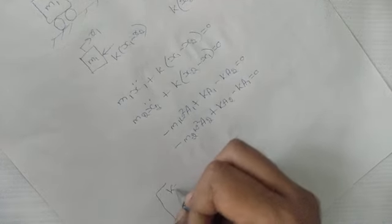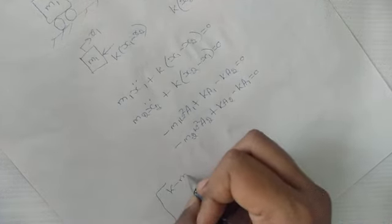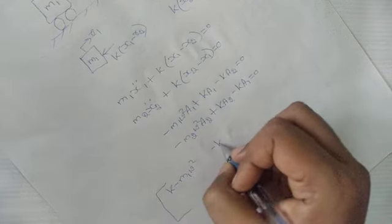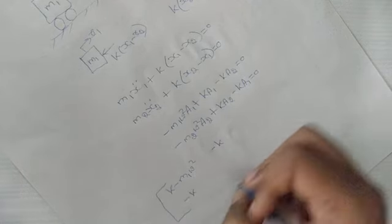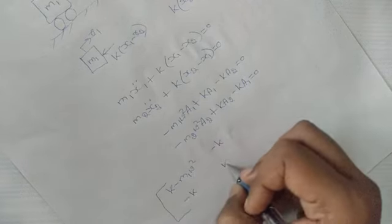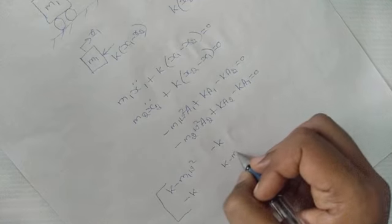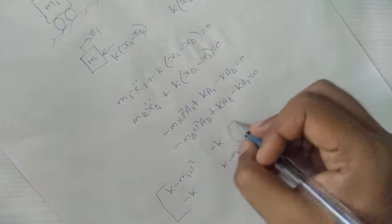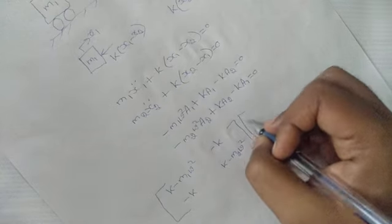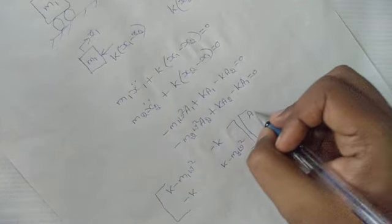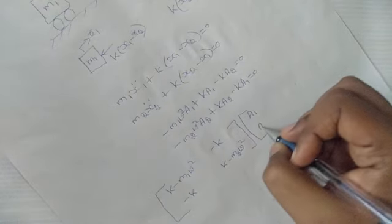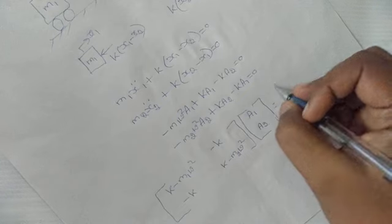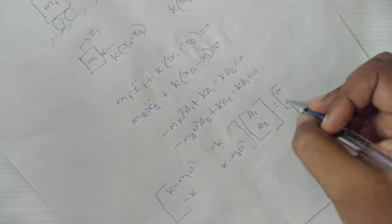This gives the matrix form: [k − m1·ω²,  −k;  −k,  k − m2·ω²] multiplied by [A1; A2] = 0.